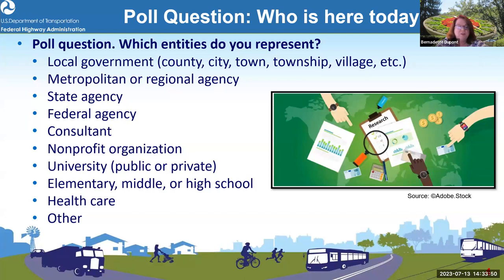The poll options include local government, MPO or RPO, state agency, federal agency, or private consultant. We're very happy to have so many people joining us today — it's very encouraging to see everyone's interest in active transportation. The results show almost a tie: 27% local government, 26% state agencies, 16% private consultants, 15% MPO, and 6% federal agency.